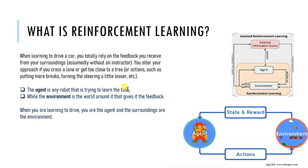Over time, the agent learns to behave in the environment by maximizing its reward and minimizing its penalties — similar to how a baby learns to walk by taking steps and getting feedback from the environment. This is what reinforcement learning is. In the next video, we will be learning about the objectives of reinforcement learning.